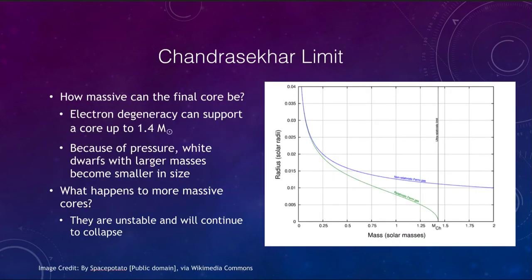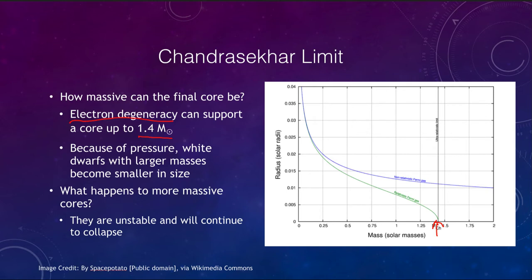Let's look at what is called the Chandrasekhar limit, which tells us how massive that final core can be. The electron pressure — those electrons pushing against each other as close as they can possibly be — does have a limit and can support a core up to 1.4 times the mass of the Sun. Anything larger than that with more mass is going to crush in upon itself and will overcome that electron degeneracy, pushing those electrons into the nuclei.